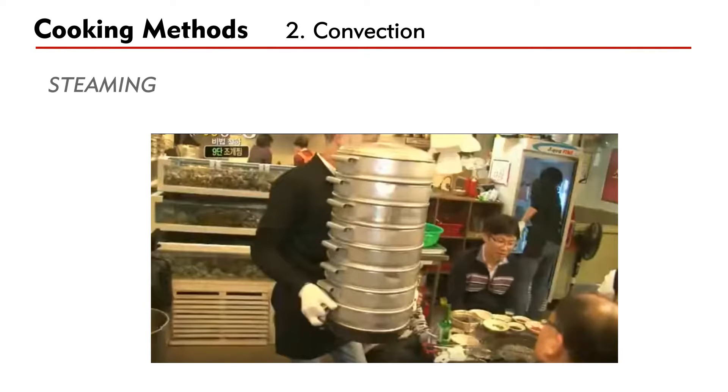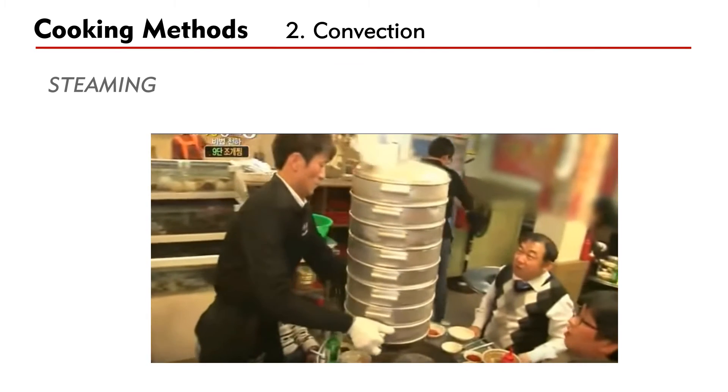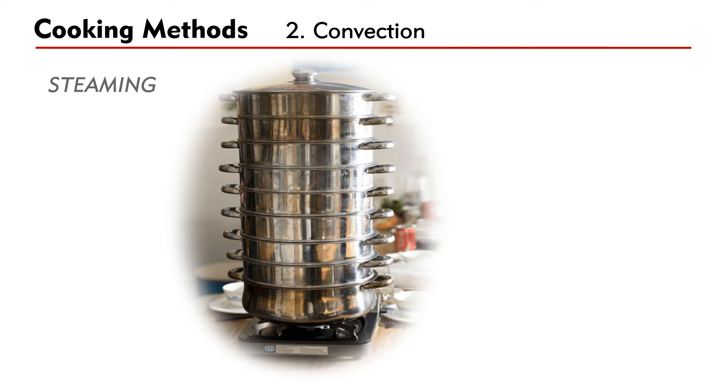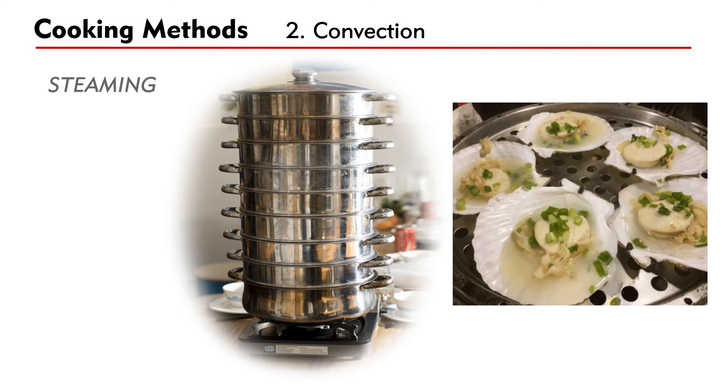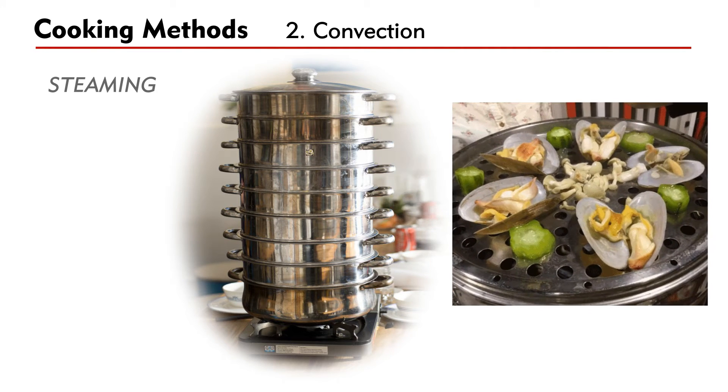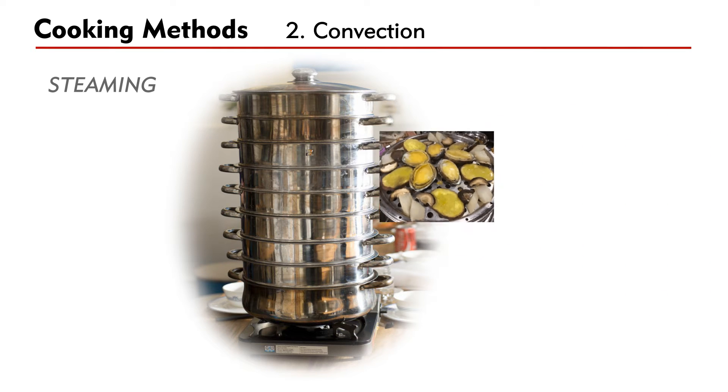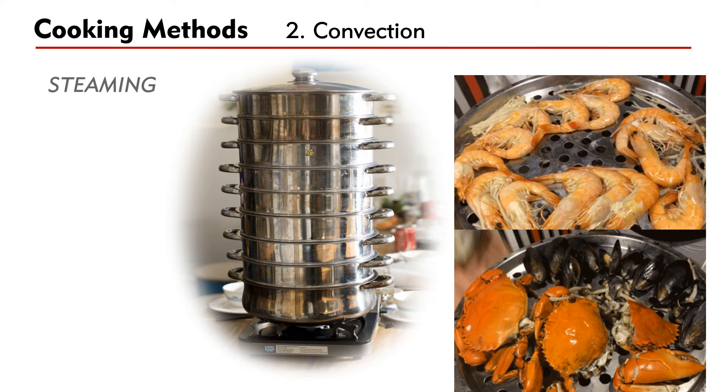Secondly, steaming. A Korean way of serving seafood in front of customers is getting popularity in Hong Kong. The cookware consists of a tower of steaming containers stacking on top of one another with water boiling at the base. Seafood like scallops, clams, razor fish, abalone, shrimps, and crabs are cooked by the rising steam.